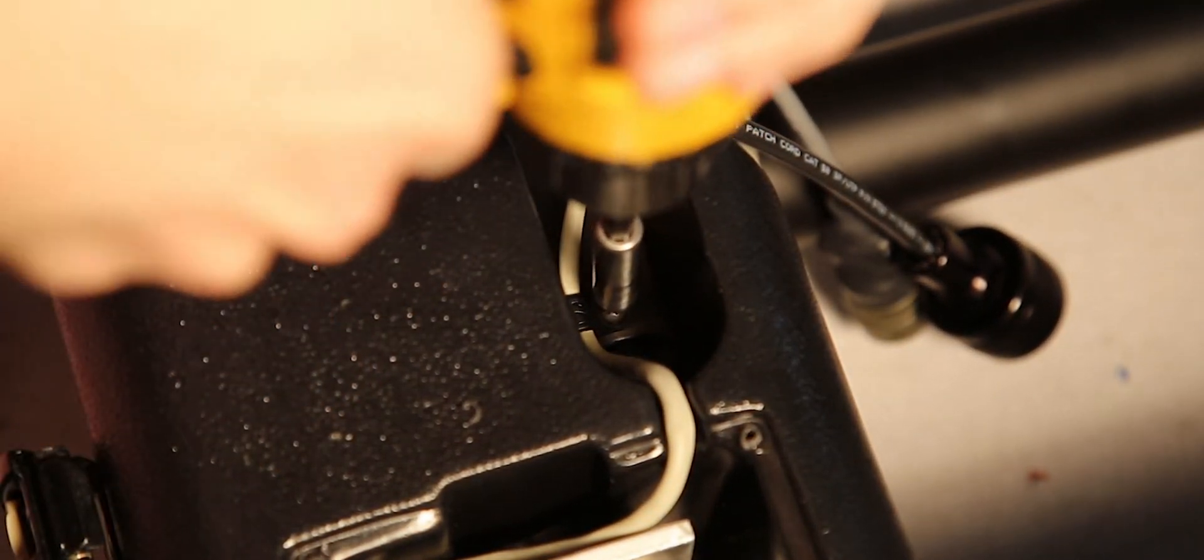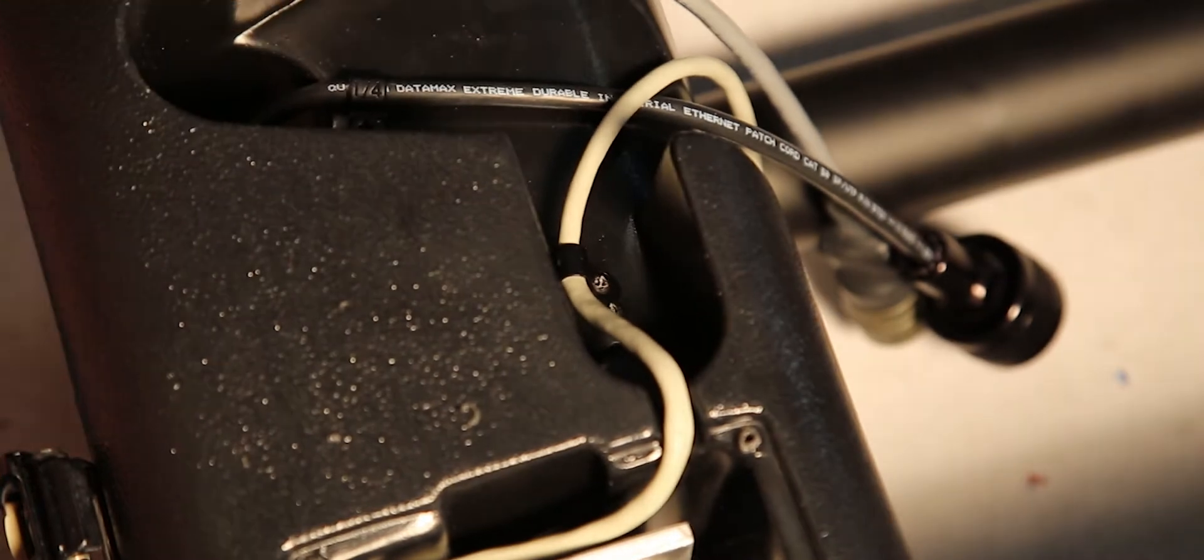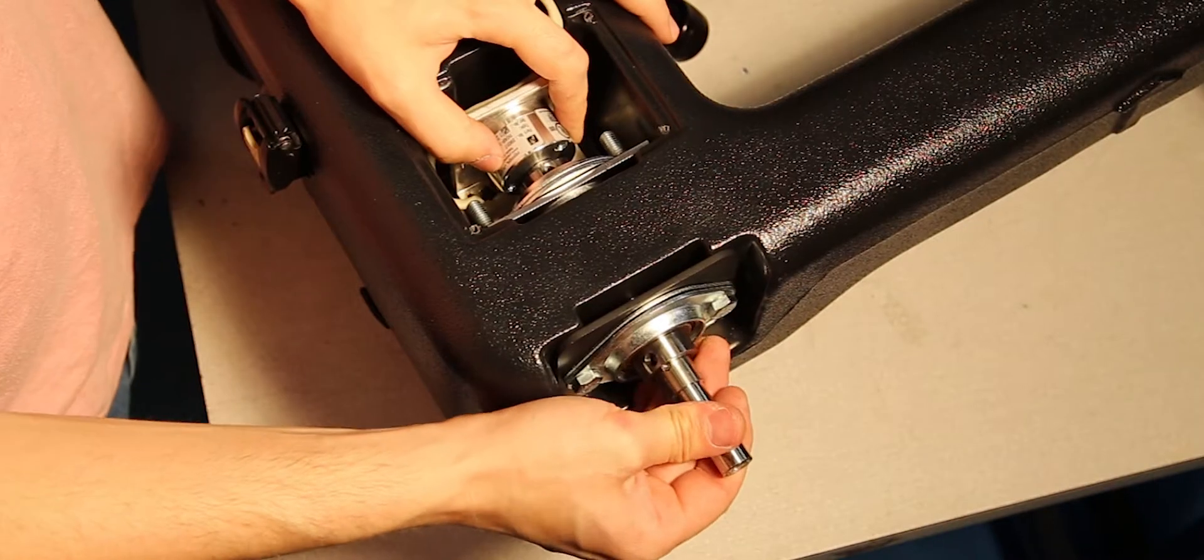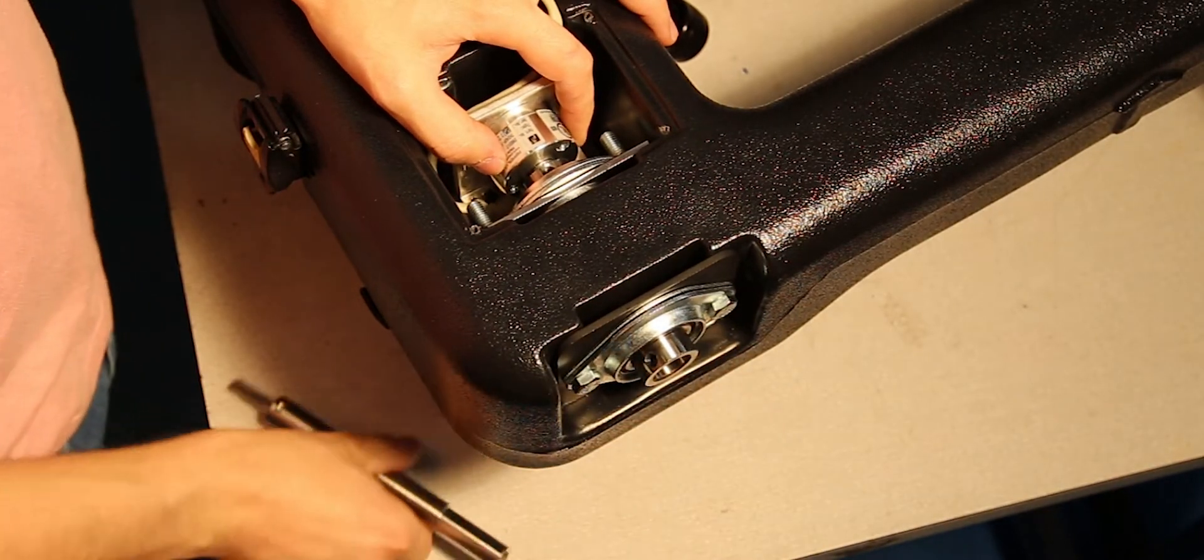Lastly, locate the P-clip holding the encoder cable and remove the screw. Slide out the axle from the flange bearings and remove the encoder.